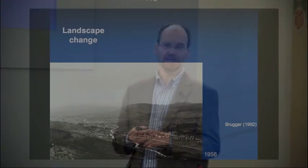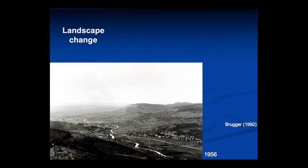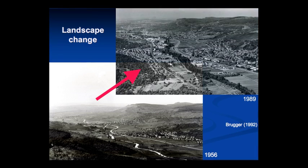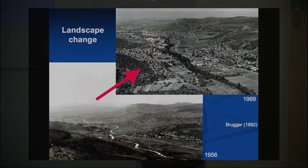This is an example from southern Germany, a landscape shown in 1956. Albrecht Brugger managed to go to the same spot a few years later, in 1989, and you see a very strongly modified landscape with lots of urban sprawl and large roads.